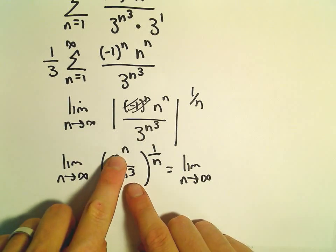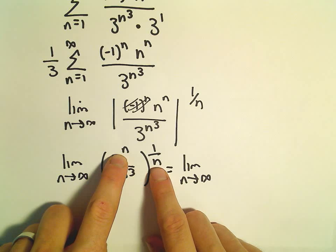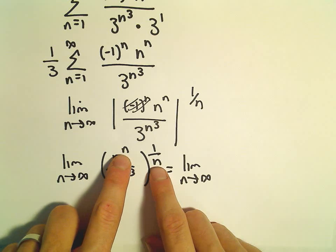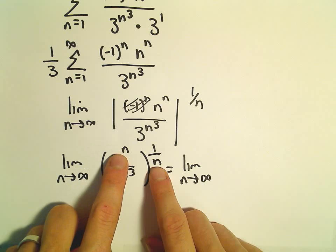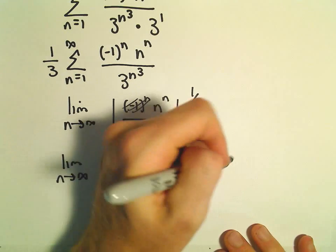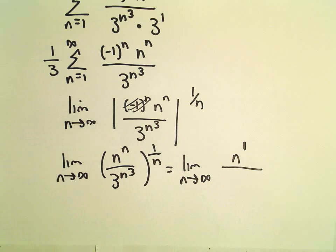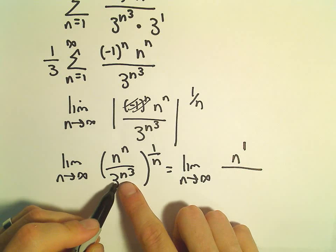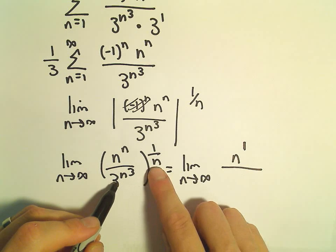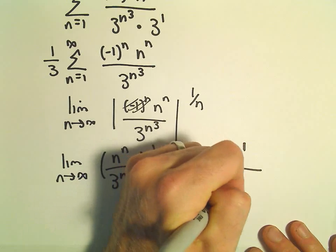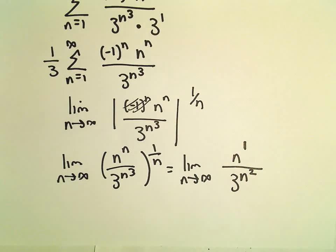But let's see, if we take n to the n power and raise that to the 1 over n power, again, we just multiply exponents. So n times 1 over n is going to give us an n to the first in the numerator. In the denominator, we're going to have, let's see, so we would have n cubed divided by n. So that would leave us with 3n squared in the denominator.